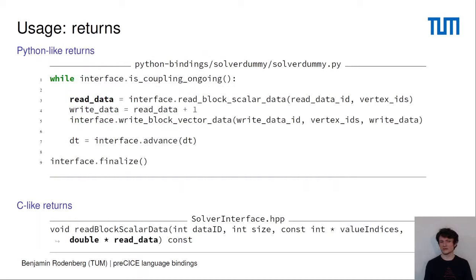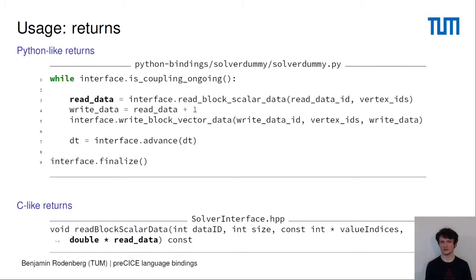One important difference between the Python and C interfaces is how return values work. In Python, we can return values differently. For example, calling interface.read_block_scalar_data simply returns read_data. In the C interface, read_block_scalar_data is a void function that writes return data into a double pointer array. We make this change because a return-by-pointer pattern is very unfamiliar and unnecessarily complicated in Python, so we just return a NumPy array instead.